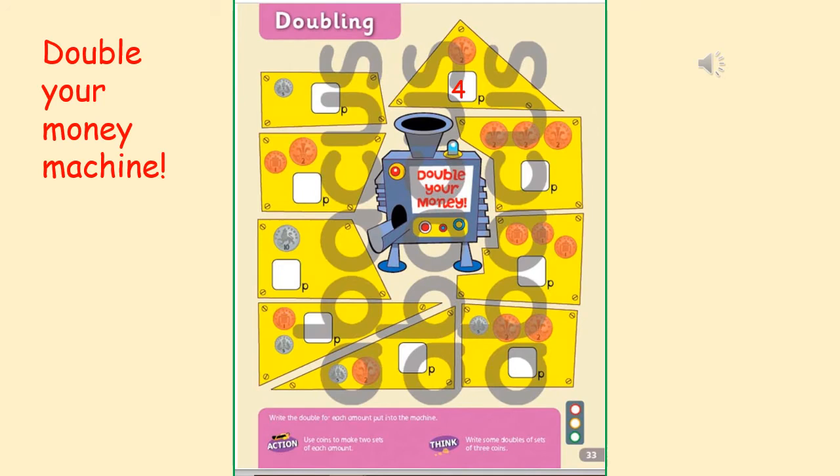Here's a double your money machine. I could really do with one of these in my house. Have a look at the coins on the screen. They go into the double your money machine, and they come out doubled. So have a good go. And once you've finished, choose three different coins of your own, not the amounts that are on the sheet, and have a go at doubling those.